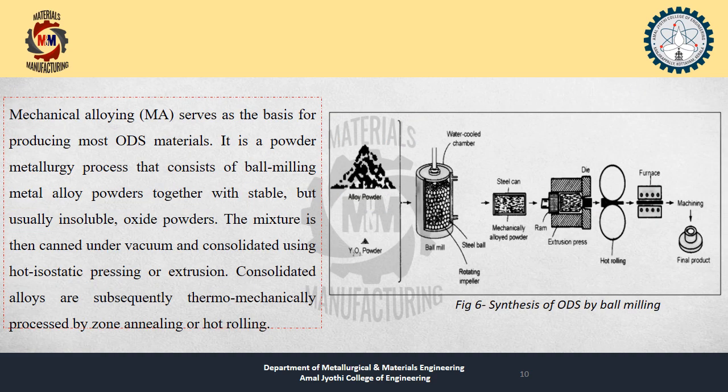Mechanical alloying serves as a basis for producing most ODS materials. The alloy powder and the oxide powder — which may be yttria or alumina powder — are placed into a ball mill and rotated. After mechanical milling inside the ball mill, the powder is taken out and may then be extruded, hot rolled, or hot isostatically pressed to obtain the final product. The material may then be annealed or subjected to different heat treatment processes.